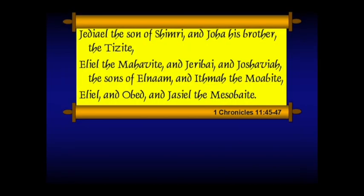Notice in verse 41 there — Uriah the Hittite. I wanted to catch that one because he's going to be very important in the life of David — that's Bathsheba's husband that David arranges to murder. So he's one of the mighty men, not just a soldier. He's one of the key guys. And that closes out the list of David's mighty men.